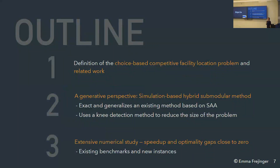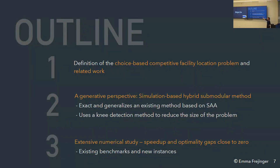For the outline: I'll define the problem class and related work, provide background on random utility maximization models, present our approach from a generative perspective, and introduce the simulation-based hybrid submodular method — which generalizes existing methods. The resulting algorithm has no user-defined hyperparameters. Then I'll cover the extensive numerical study. The paper is on arXiv and this is the first time I'm presenting this work.